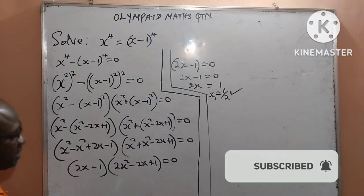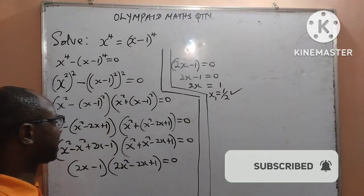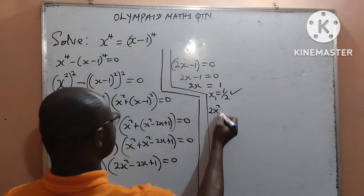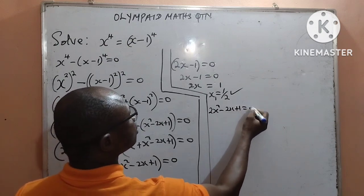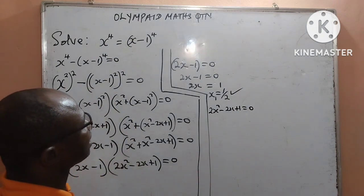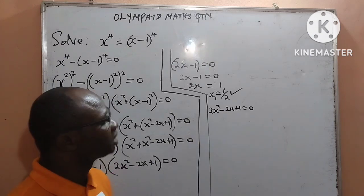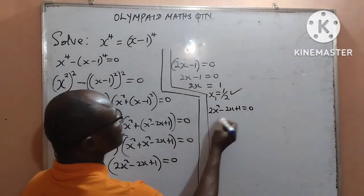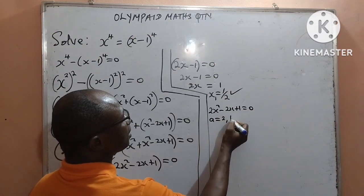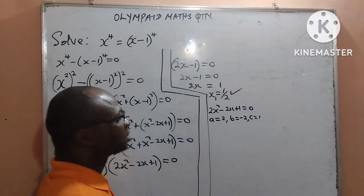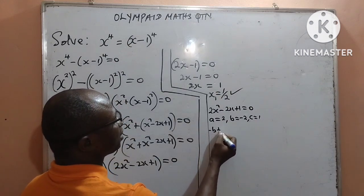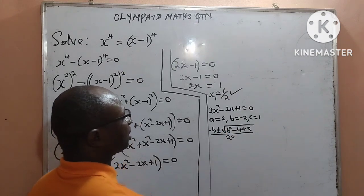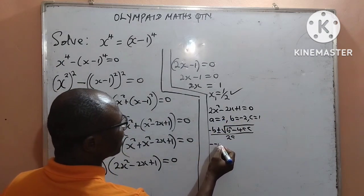We will now go into the second bracket. You can agree with me that it is a quadratic equation where I have 2x squared minus 2x plus 1 equal to 0. We cannot solve it by simple factoring, so let us apply the quadratic formula. Here, a equals 2, b equals negative 2, and c equals 1. The quadratic formula says x equals minus b plus or minus the square root of b squared minus 4ac, all over 2a.